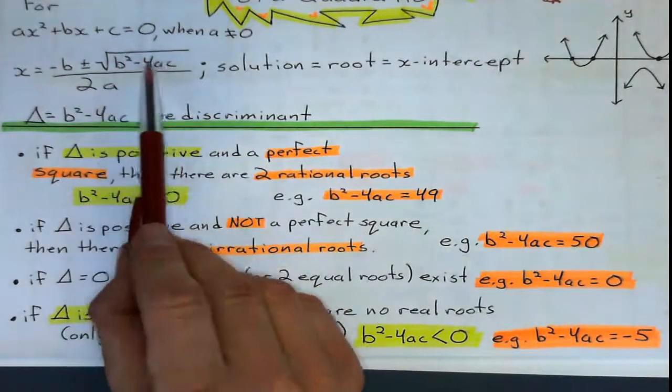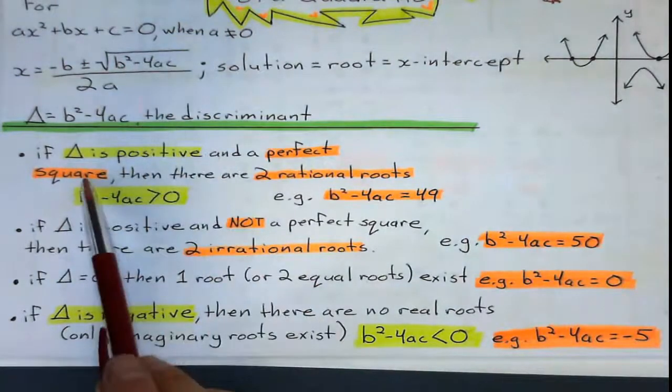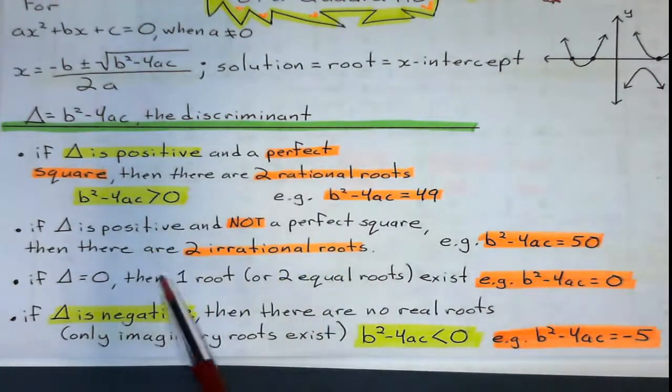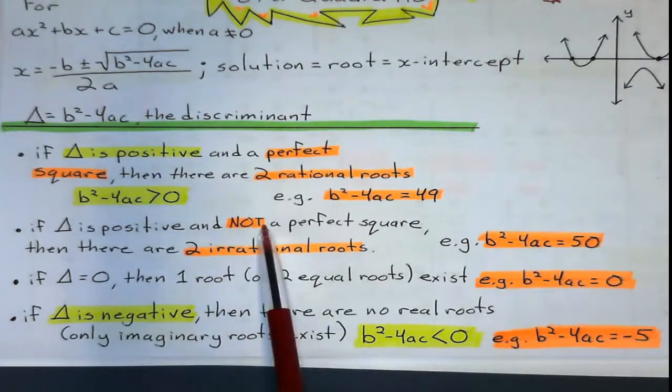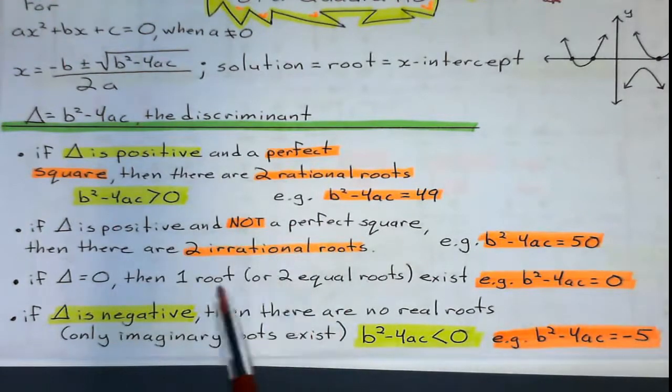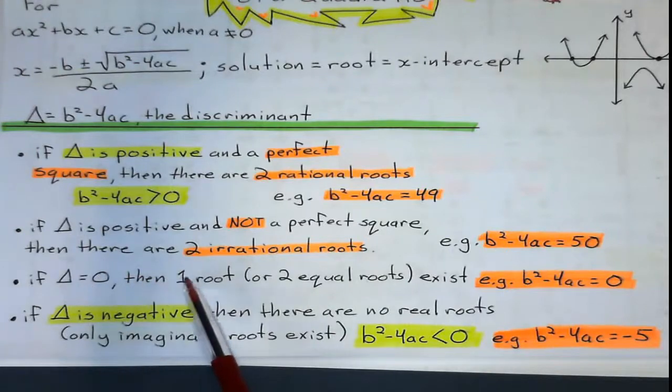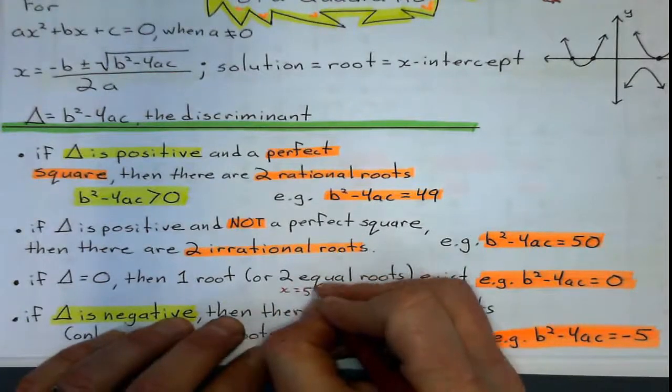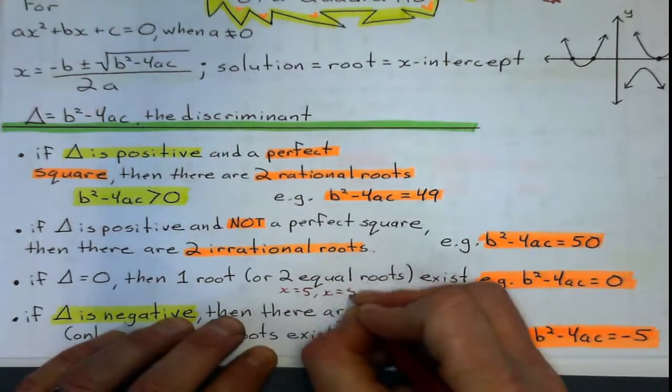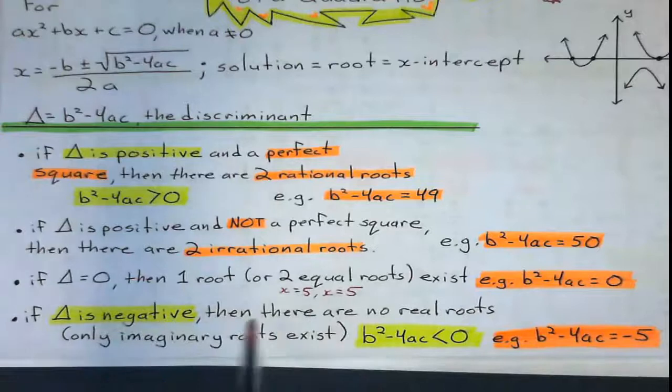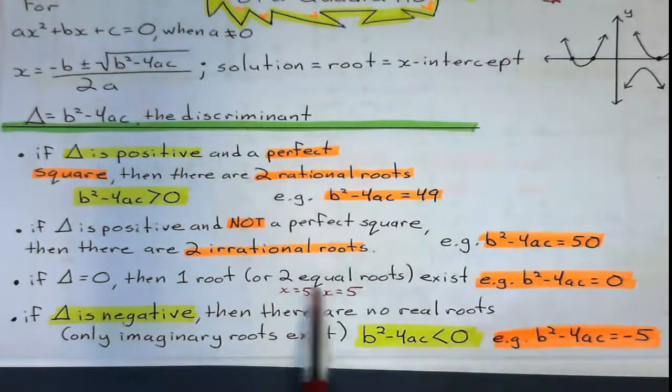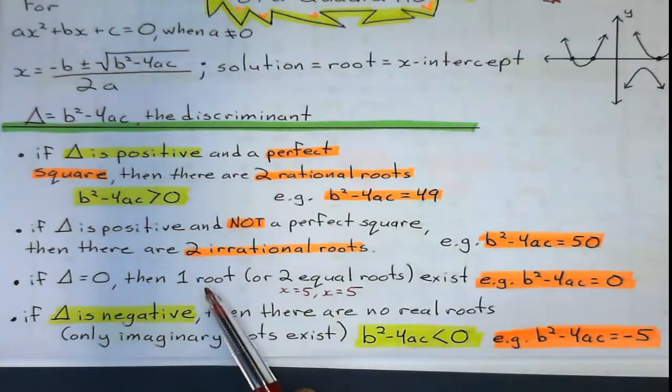So what's the discriminant? It was that part of the quadratic formula. If the discriminant is positive and it's a perfect square, then there's two rational roots. If the discriminant is positive and not a perfect square, it's got two irrational roots. If the discriminant is zero, then it has one root, or two equal roots. And if it's negative, that means there's no real roots, or only imaginary roots exist.